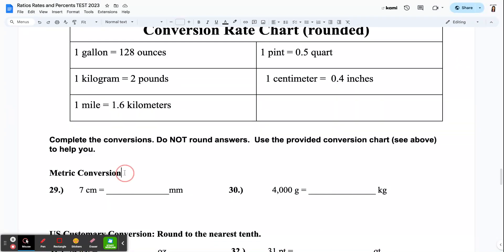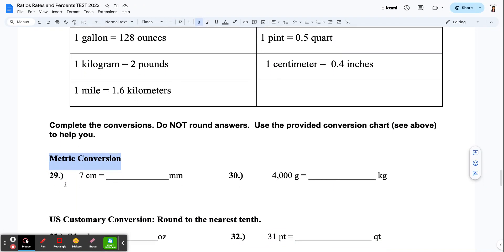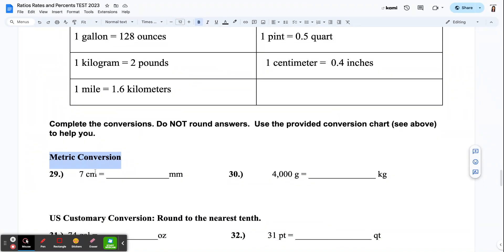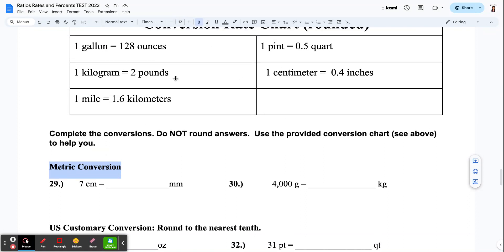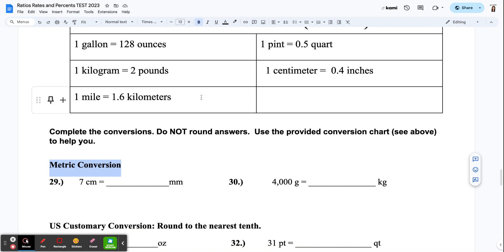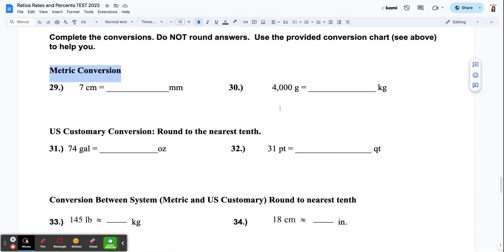So the first part, you're just doing metric conversion. Complete the conversions. Do not round your answers. With this metric, you don't round your answers. Use the provided conversion chart, see above, to help you if you need it. So if you look, we're converting centimeters to millimeters and grams to kilograms. So we don't need to use anything from the conversion chart up here because the conversion chart is all, some side of it is U.S. customary. So this is just metric. We're not going to use the chart.